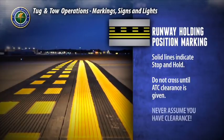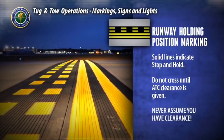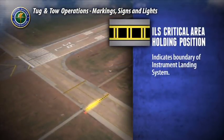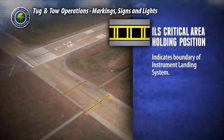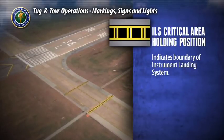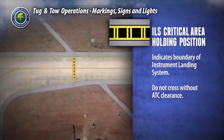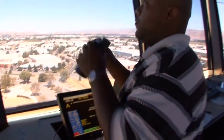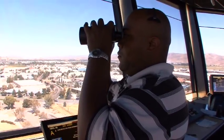Never assume you have clearance — always wait for air traffic control instructions. The ILS critical area holding position marking indicates the boundary of the ILS critical area, or instrument landing system. If the ILS is in use due to weather or other conditions, do not cross this marking without air traffic control clearance. Taxiing beyond this point may interfere with the ILS signal to approaching aircraft. If the ILS is in use, you will receive a hold short instruction from air traffic control.